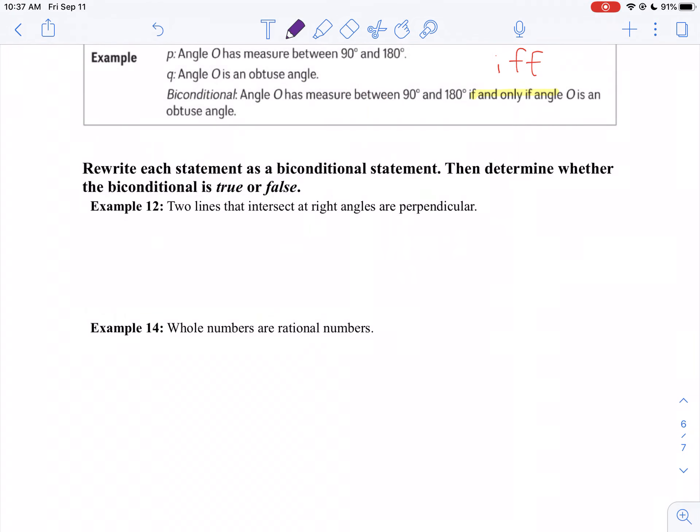So I'm going to start with the one they have. I'm going to say two lines that intersect at a right angle. So let me rewrite that. Two lines are perpendicular.